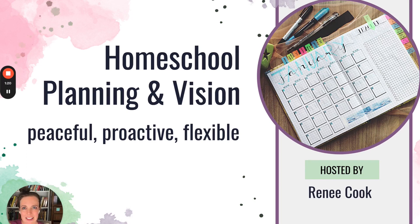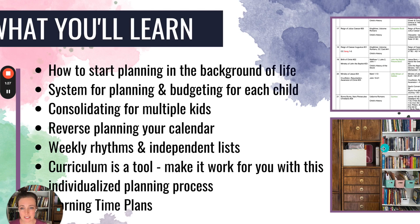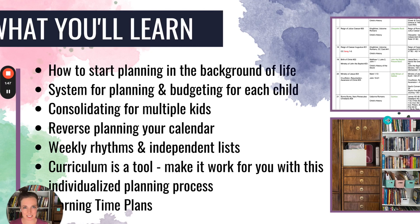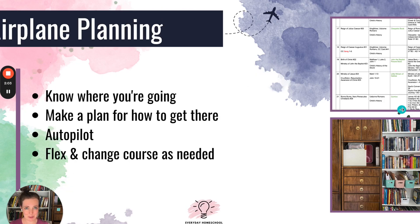I hope this is really helpful, and if you want more details and to go more in depth, I have a whole course. In the course I go into morning time plans, choosing curriculum, how to set up your kids for independent work, how to create weekly rhythms in your home, how to reverse plan your homeschool year around your family's calendar, how to consolidate subjects for multiple kids, and all kinds of details about planning, family culture, and homeschool vision. Today I'm just going to walk through setting up your core curriculum plan and budget, and how to cast a vision for your family, which might be the most important part.